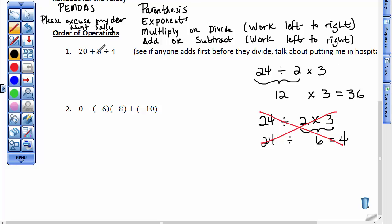In this problem there are no parentheses, there are no exponents, there is multiplication and division, specifically division. 8 divided by 4 is 2, you must do that first, and then you add and you get an answer of 22. Watch, if you had done this incorrectly, if you had added 20 and 8 first because you just thought you should work left to right, you would have gotten 28, and 28 divided by 4 would give you 7. That is incorrect.